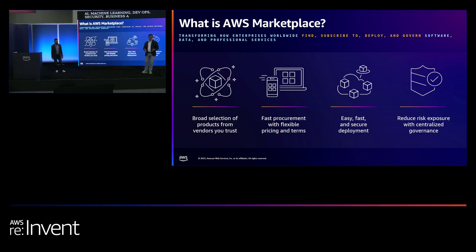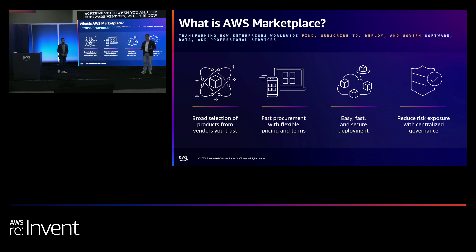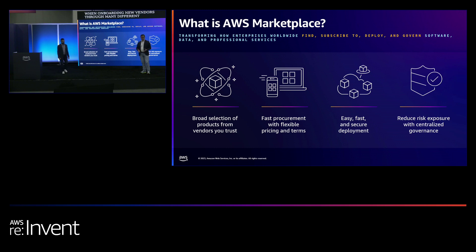In AWS Marketplace you can find solutions for all of your business needs. We offer flexible pricing features for AWS customers. We were the first Marketplace to introduce private offers, which allow you to negotiate custom terms and custom pricing with software vendors. We also offer standard contracts — standardized unified license agreements between you and the software vendors, which is now available for more than 60% of products in AWS Marketplace.